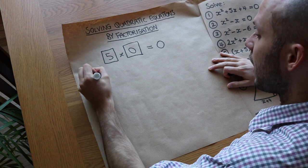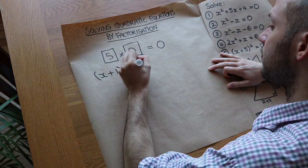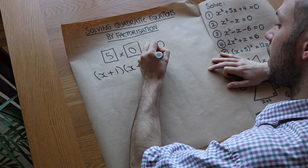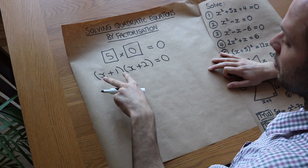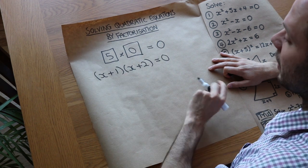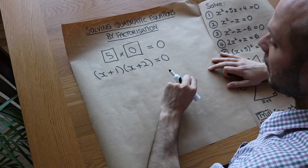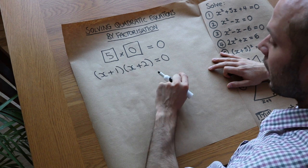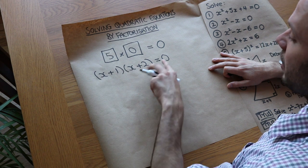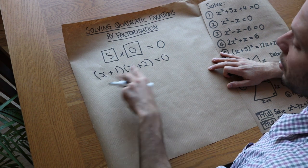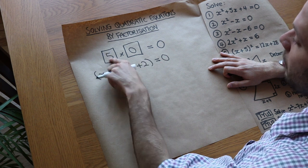So if for example we had x plus one and x plus two equals zero — notice the left-hand side is factorized because we have a product of things. Whenever you have the product of expressions or brackets, we say that's factorized. So we've got x plus one times by x plus two equals zero — two things multiplied together to give zero, just like we had above.